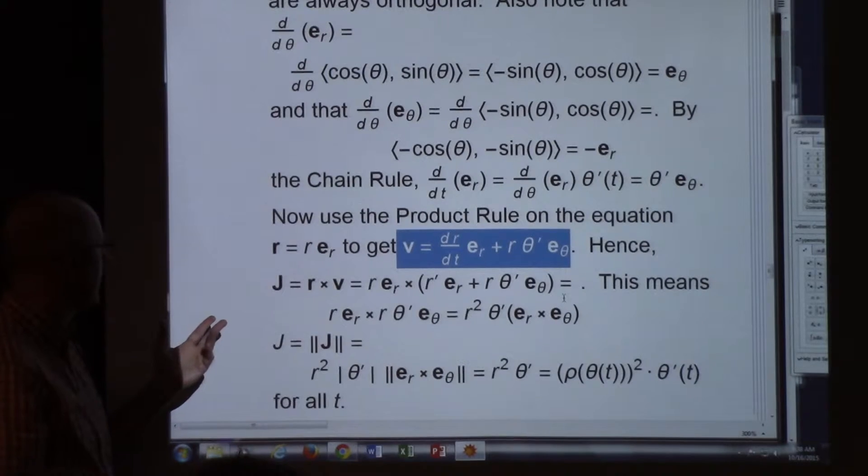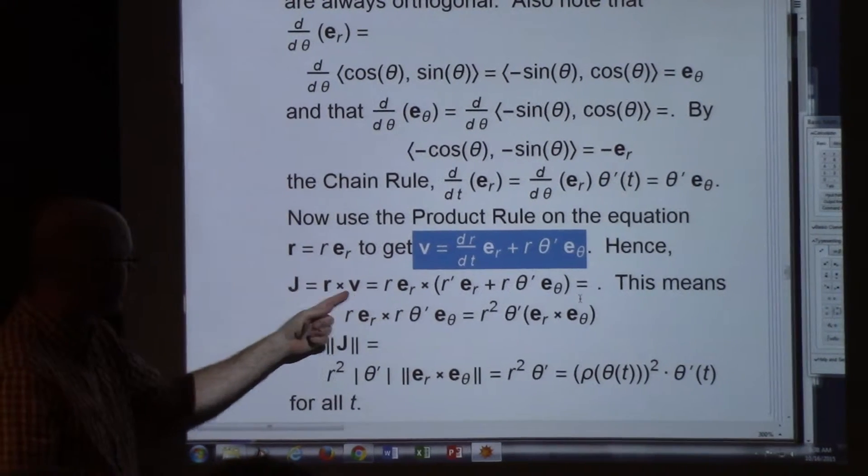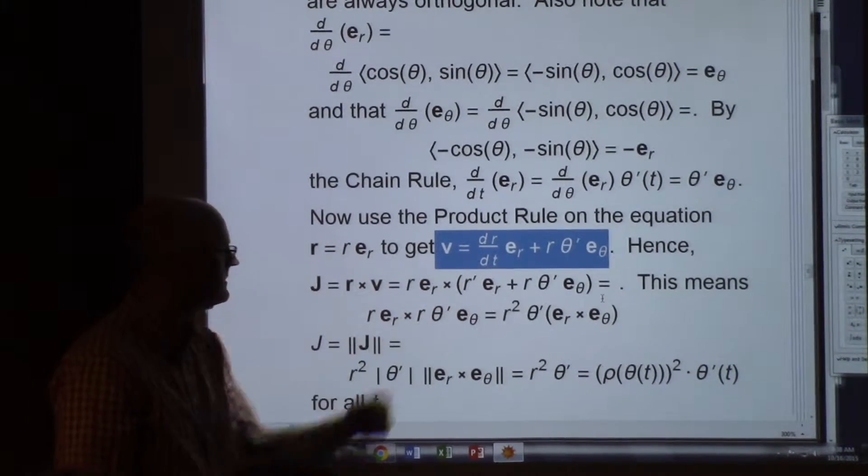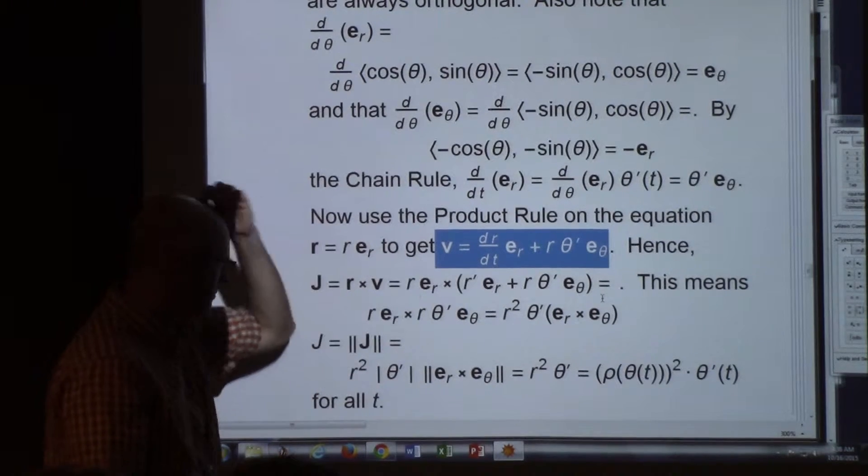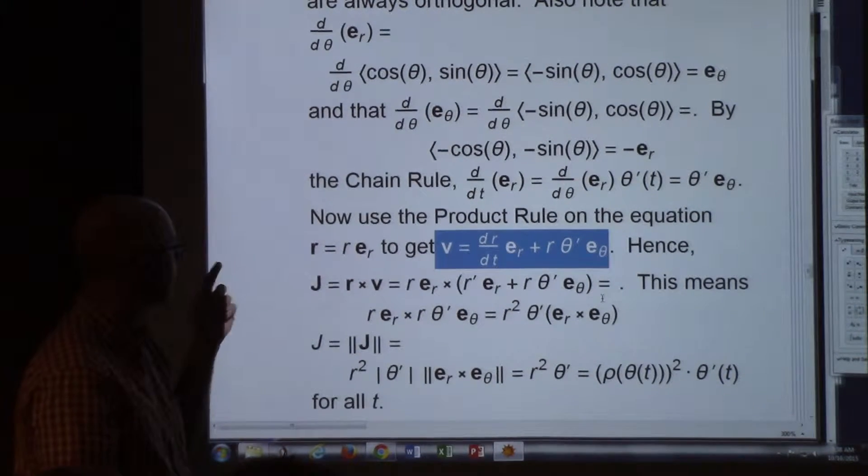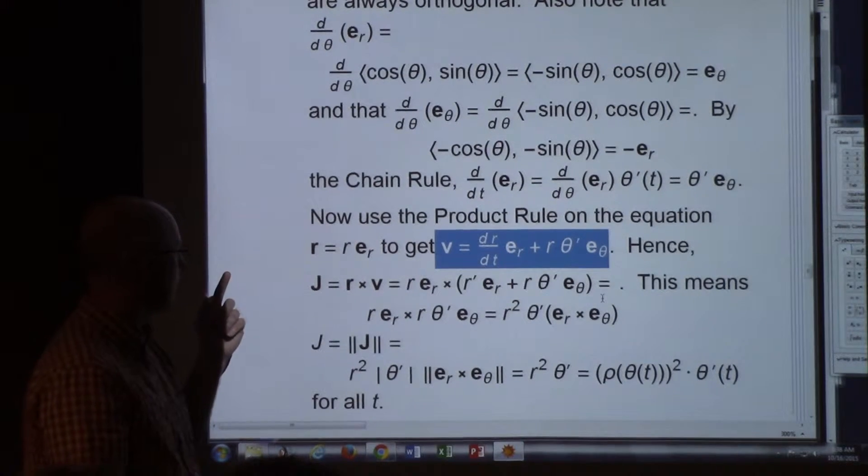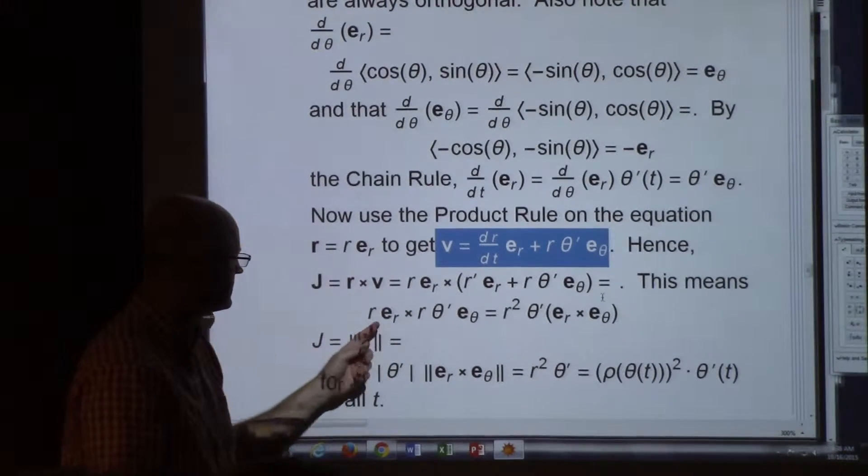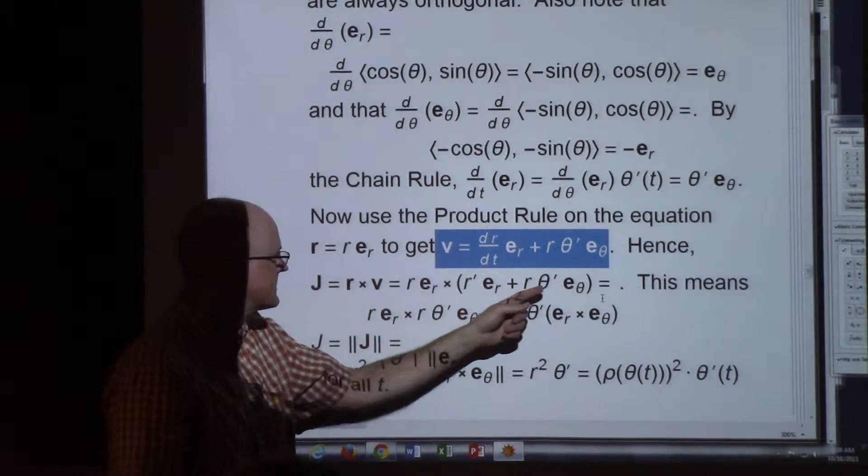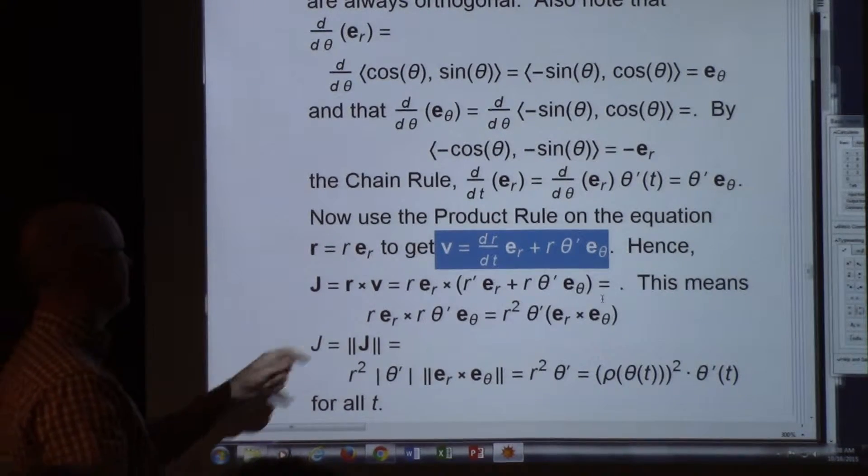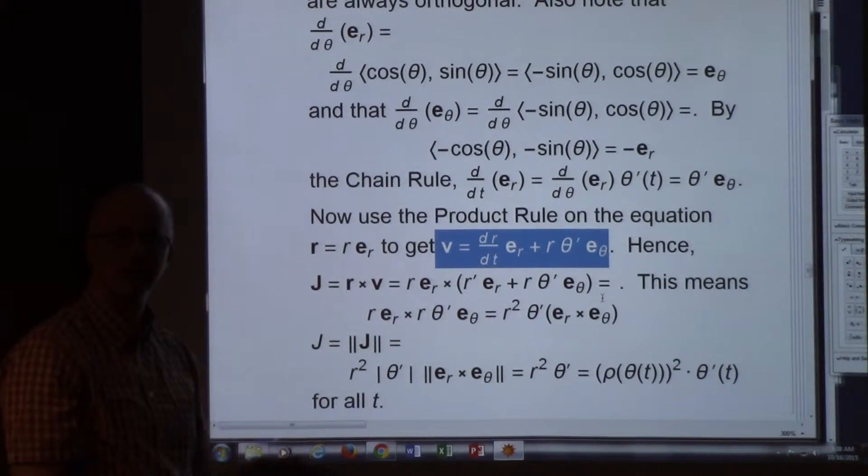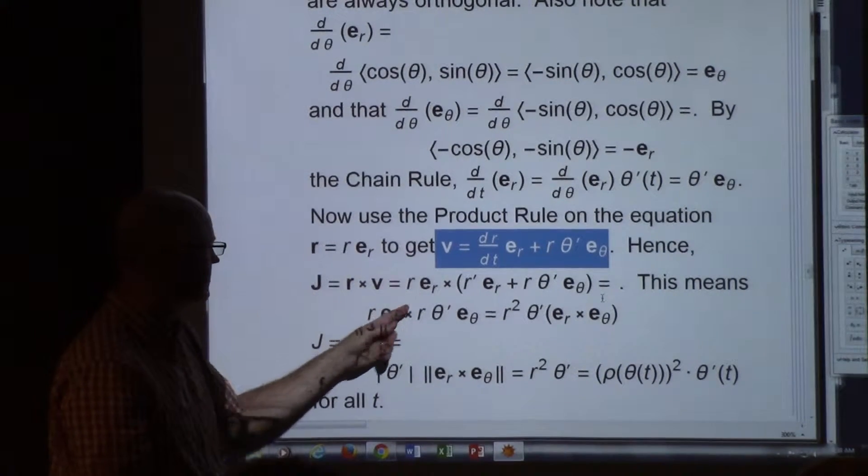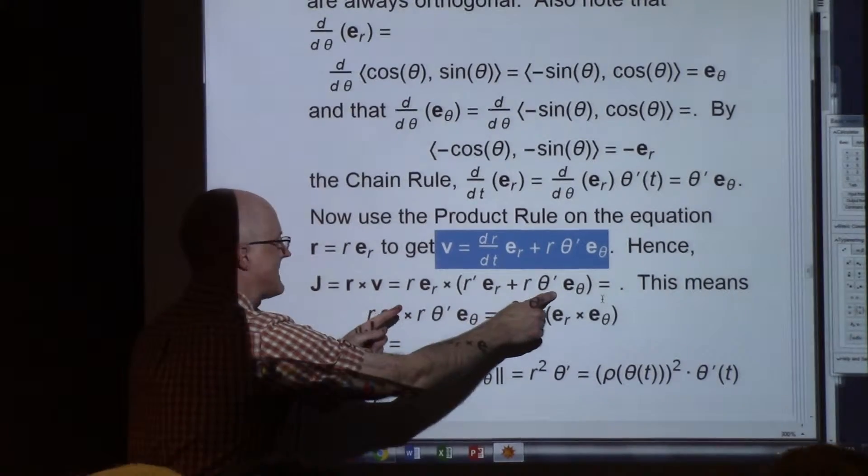We can now substitute this in for the velocity in the definition of J. Take V and substitute this expression. R prime means DR DT. Primes mean derivative with respect to T here. And we can distribute. There's a distributive law that allows us to take this vector and put it in through the parentheses to get this cross product and the cross product of this with this. The first cross product is zero because it's got an ER cross ER, a vector cross itself. So it simplifies to just this cross that which is what you see here.